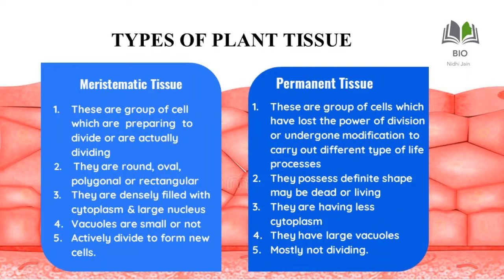Meristematic tissue cells are round, oval, polygonal, or rectangular, while permanent tissue cells possess a definite shape and may be dead or living. Meristematic tissue is densely filled with cytoplasm and has a large nucleus to help them divide. Permanent tissue has less cytoplasm. In meristematic tissue, vacuoles are small or absent, while in permanent tissue vacuoles are large. Meristematic tissue actively divides to form new cells; permanent tissue does not.